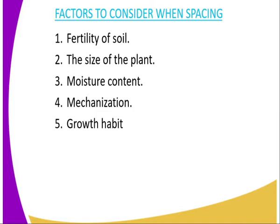The third factor is moisture content in the soil. Soil that contains a lot of moisture requires close spacing. While soil that contains little moisture, for example sandy soil, requires wider spacing to minimize competition for nutrients by the plants. The fourth factor is mechanization of the farm. If you know that you will use a machine to carry out farming operations, it requires wider spacing to allow a path through which the machine will pass, for example when spraying and also when weeding.